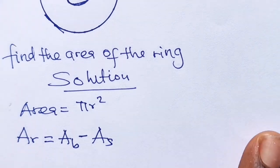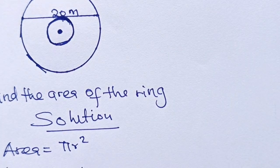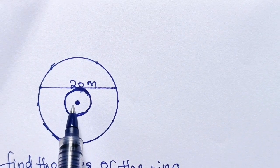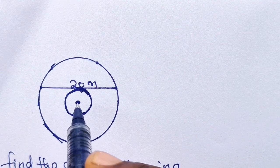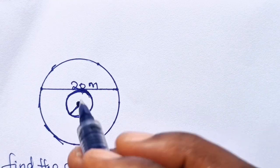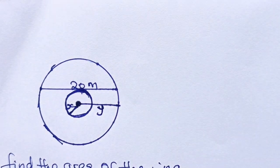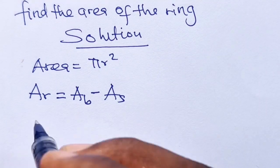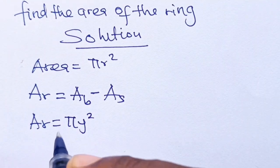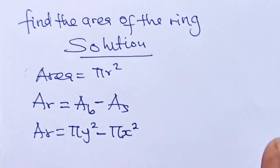Let's get the radius of the big circle and the radius of the smaller circle, since radius plays a bigger role in finding the area. The radius of the smaller circle — drawn from the center to the circumference — let's call it x. The radius of the bigger circle, drawn from the center to its circumference, we call y. So the area of the ring equals π y squared minus π x squared.